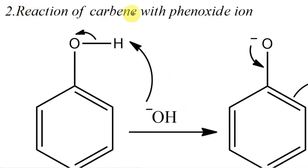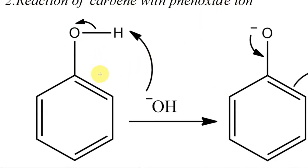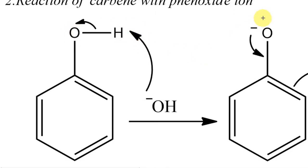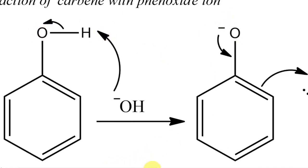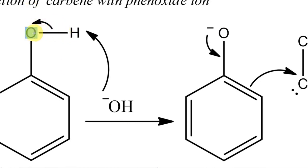The second part of the reaction is the reaction of the carbene with the phenoxide ion. Phenol is reasonably acidic (pKa around 10), and in the presence of OH⁻ or NaOH, phenol gets deprotonated to give the phenoxide ion. The curved arrow shows a new bond forming between O and H, and the other arrow shows the two electrons in the O–H bond staying on oxygen, giving oxygen a negative charge.